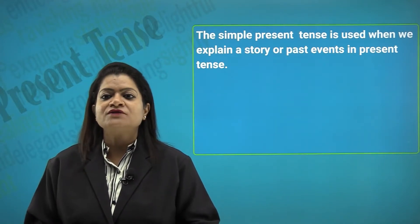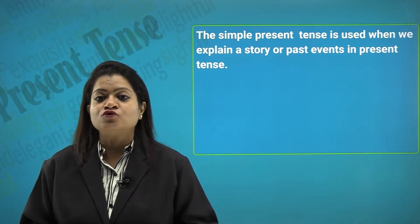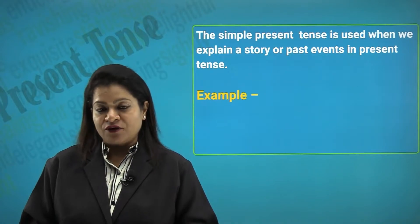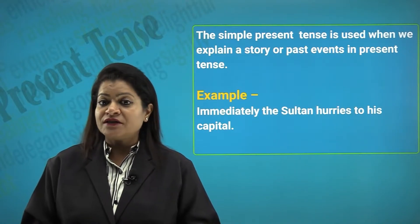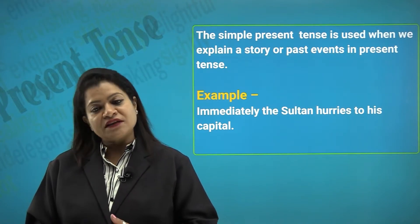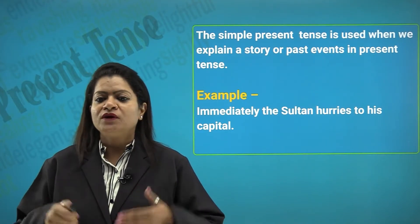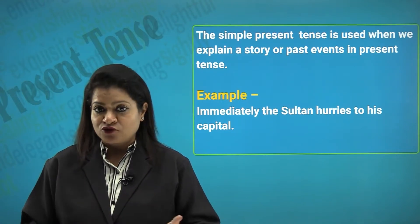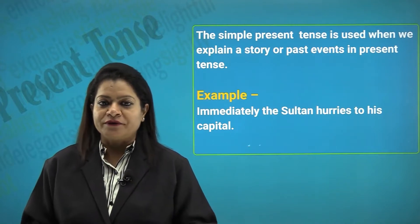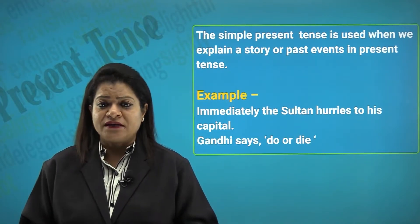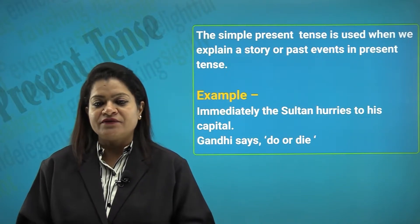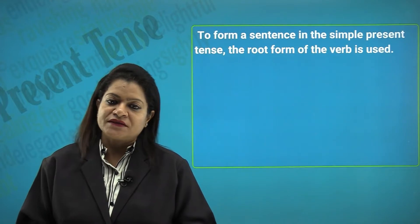The simple present tense is also used when we explain a story or past events in the present tense. For example, 'Immediately the Sultan hurries to his capital' — the story is not set in the present time, but we use the present tense to denote the actions done then. Similarly, 'Gandhi says do or die' — Gandhi is gone, but what he said remains relevant. Hence we use the present indefinite tense.